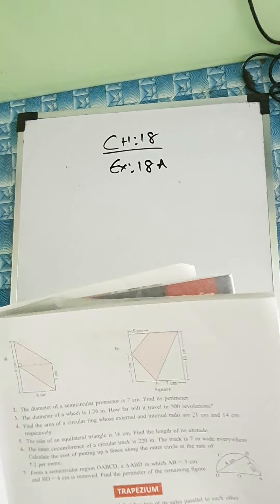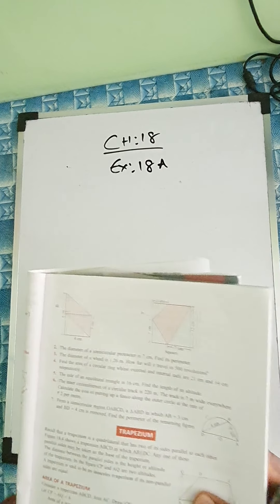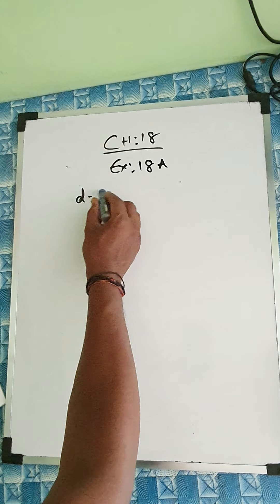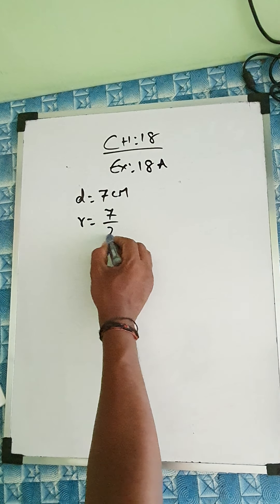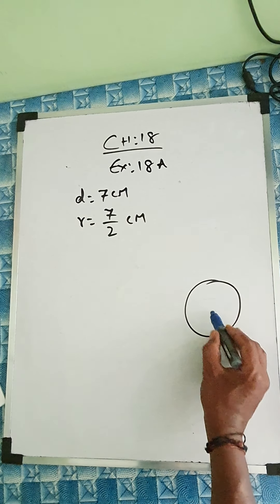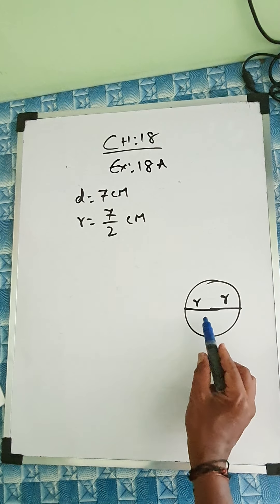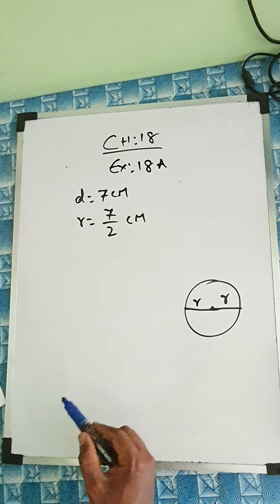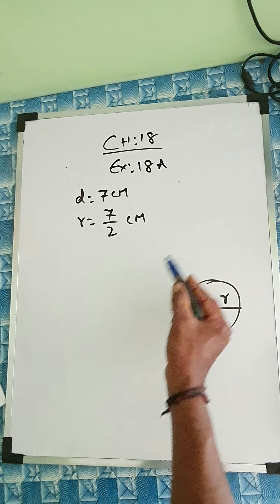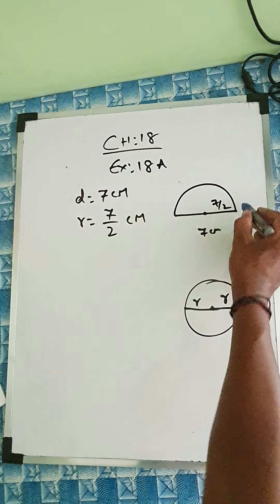Now I'll go to question number 2. The diameter of a semicircular protractor is 7 centimeters; find its perimeter. Diameter is 7 centimeters, so radius is 7 by 2. Remember: diameter is 2 times radius, so radius is half the diameter. Here diameter is 7, so radius is 7 by 2, and the shape is a semicircle.